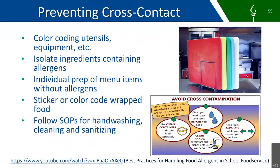Ways to prevent cross-contact include color-coding your utensils and equipment, isolating ingredients containing allergens, individually prepping menu items without allergens, using stickers or color-coding to label wrapped foods, and following your SOPs for hand washing, cleaning, and sanitizing. I've included a link to a YouTube video on ways to prevent cross-contact at the bottom of the slide — it's just a couple of minutes and is good to watch.